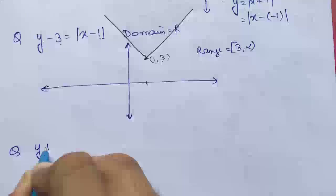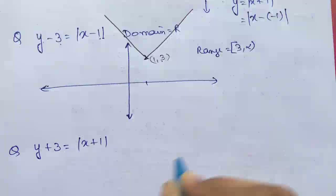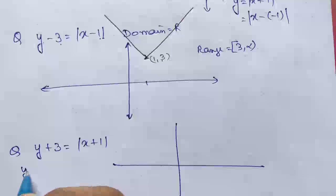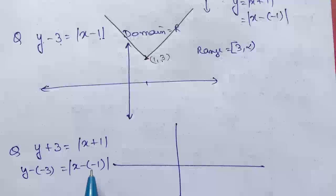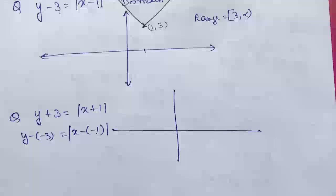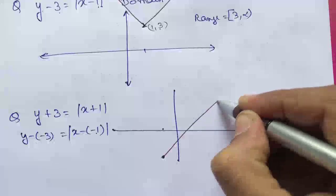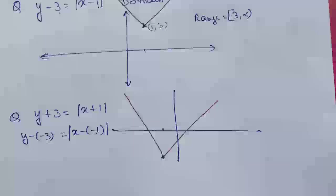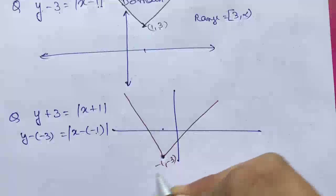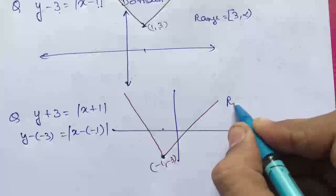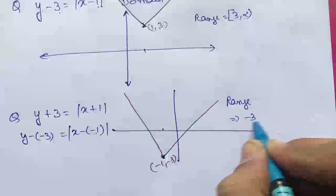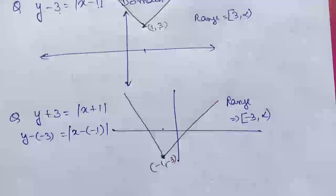Another change: y + 3 = |x + 1|, which means y − (−3) = |x − (−1)|. So the vertex moves to (−1, −3), which is somewhat in the third quadrant. The graph shape stays the same V-shape but shifted. The y values start from −3 going to positive infinity, so the range is [−3, ∞).